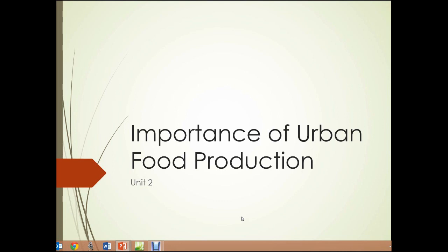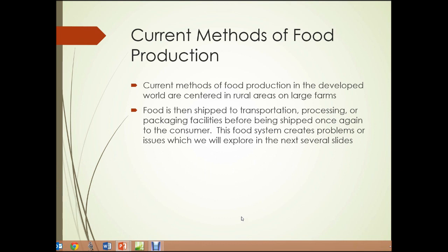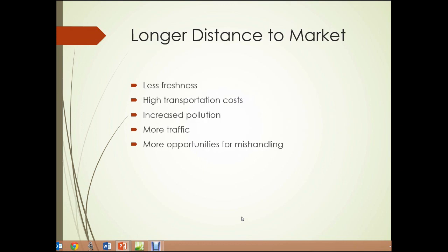Unit 2: the importance of urban food production. In Unit 1, we looked at the importance of sustainable practices. In Unit 2, we're going to look at why urban food production is important. The current methods of food production in the developed world are centered in rural areas on large farms. The food produced there is then shipped to transportation, processing, or packaging facilities before being shipped once again to the consumer, and this food system creates problems we'll explore in the next several slides.